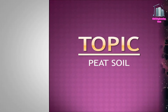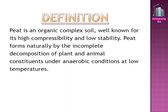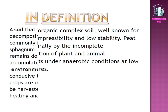Definition: Peat is an organic complex soil well known for its high compressibility and low stability. Peat forms naturally by the incomplete decomposition of plant and animal constituents under anaerobic conditions at low temperatures.